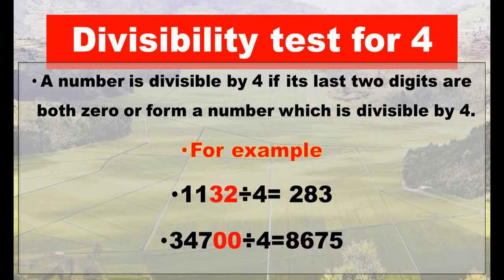Divisibility test for four: a number is divisible by four if its last two digits are both zero or form a number that is divisible by four. For example, 1,132 divided by 4 equals 283. In this example, the last two digits, 32, are divisible by four.